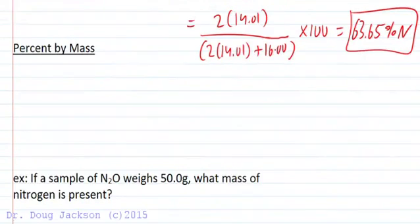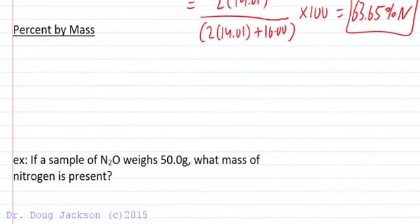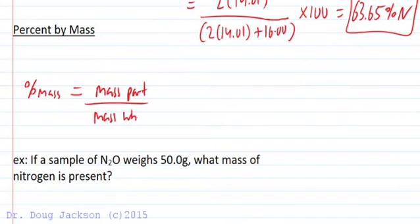Let's take it a step further and talk about percent by mass. Percent by mass is going to equal the mass of the part over the mass of the whole times 100. Now I'm intentionally vague with part and whole because we can use percent by mass for atomic considerations, we can use it for solutions.